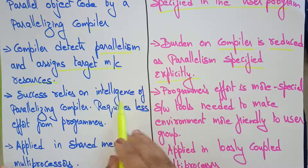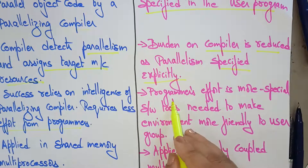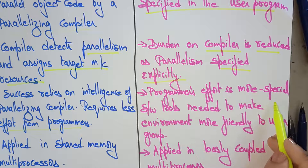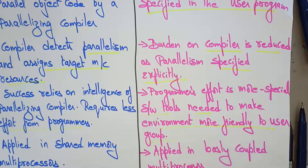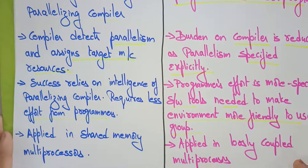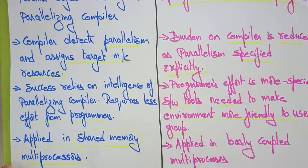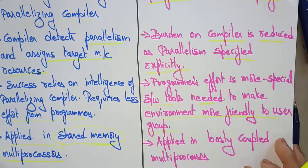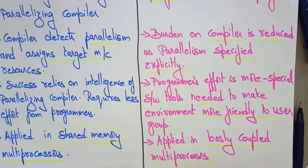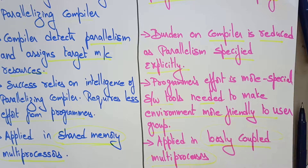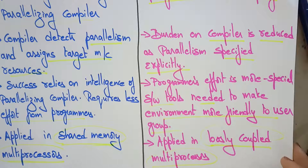In implicit parallelism, success relies on the intelligence of the parallelism compiler, and it requires less effort from programmers. Whereas in explicit parallelism, the programmer's effort is more, as special software tools are needed to make the environment more user-friendly. Implicit parallelism is applied in shared memory multiprocessors, while explicit parallelism is applied in loosely coupled multiprocessors where there is no shared memory concept.